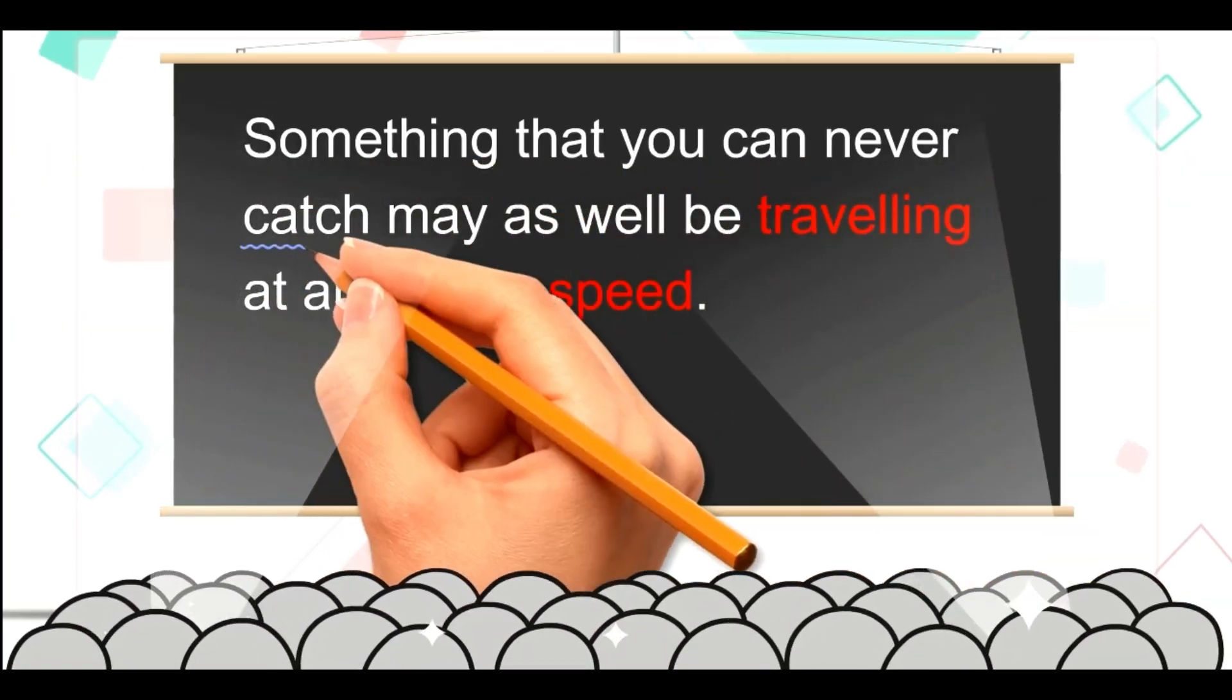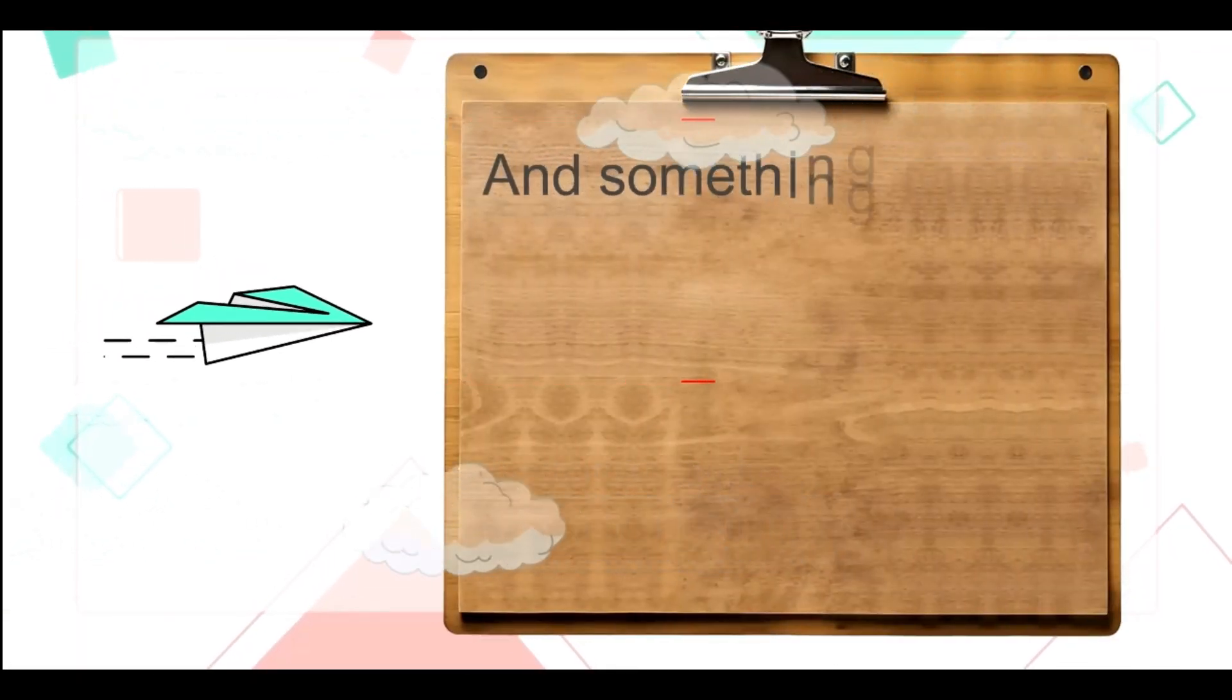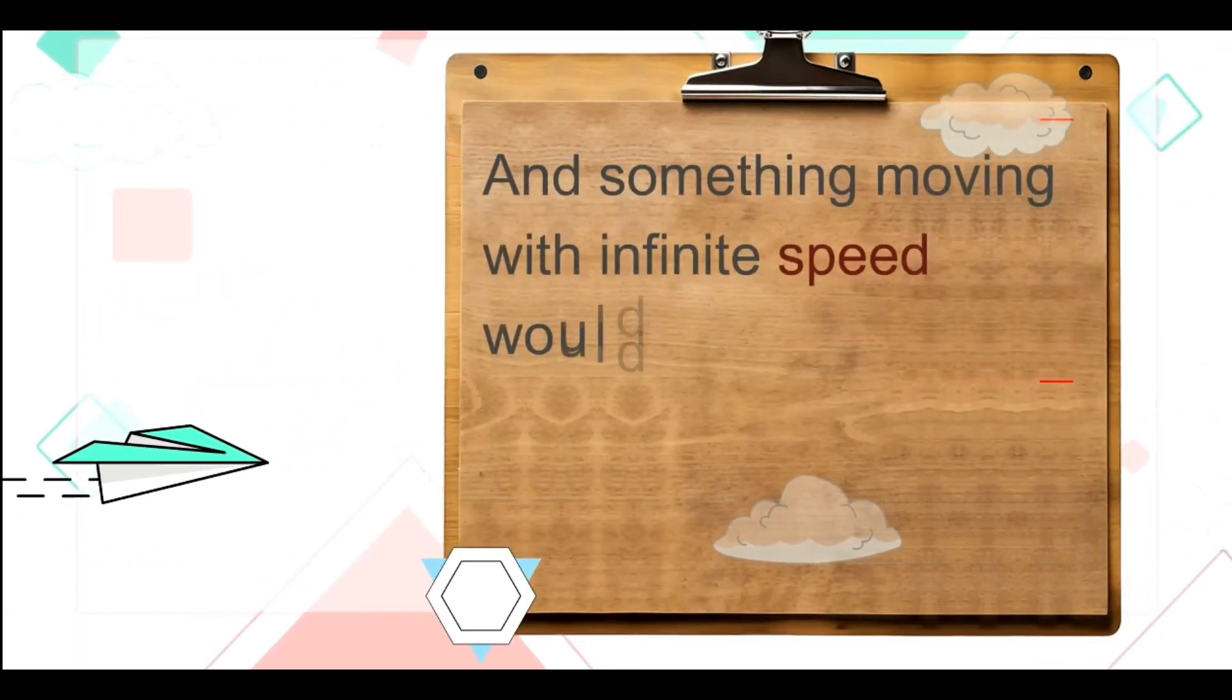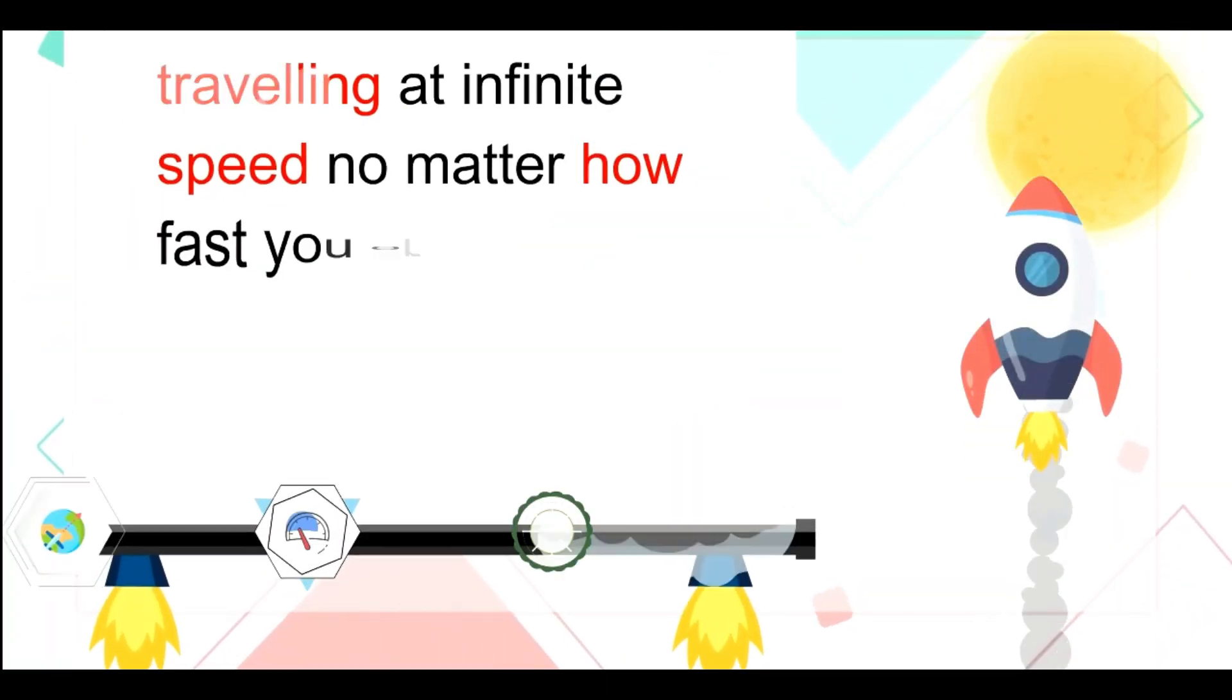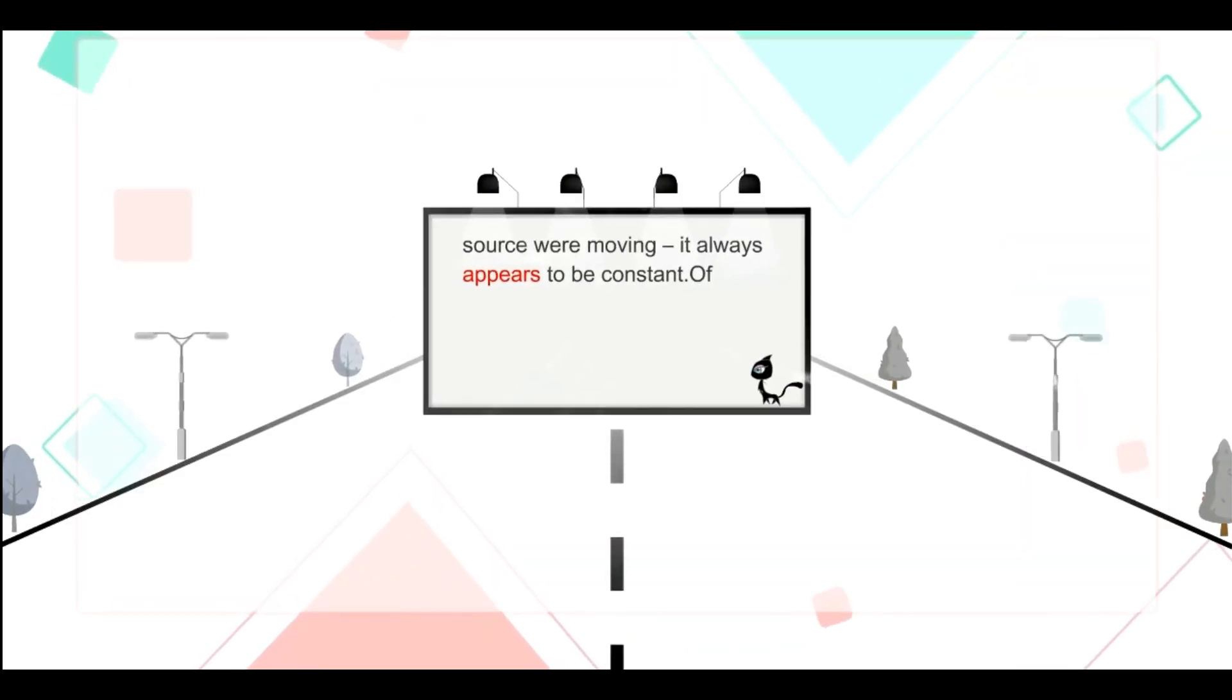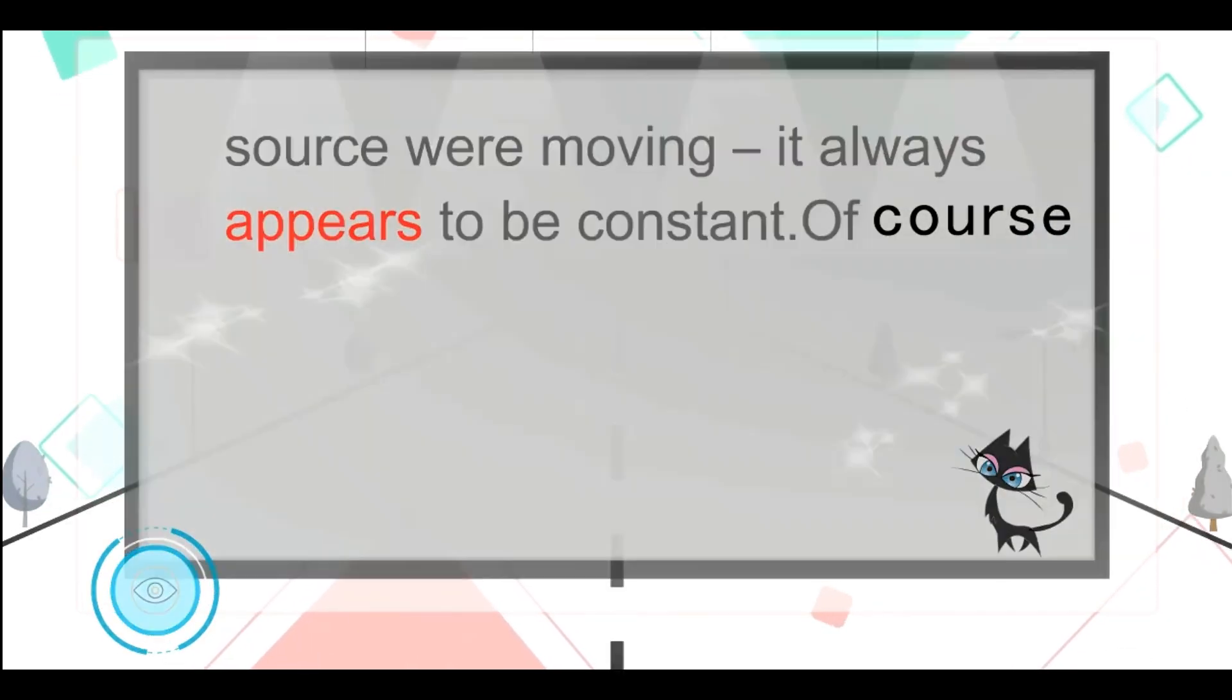Something that you can never catch may as well be traveling at an infinite speed. And something moving with infinite speed would appear to be traveling at infinite speed, no matter how fast you or its source were moving, it always appears to be constant, of course.